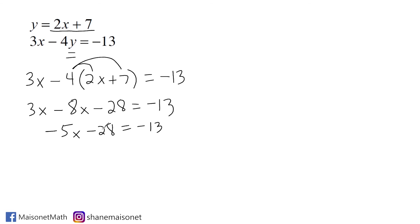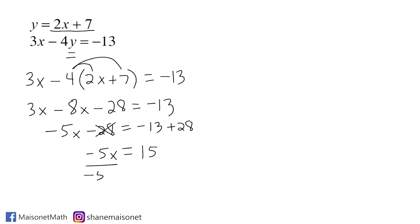Now I take the constant and write its inverse on the other side, which is positive 28. Combining negative 13 and positive 28 gives positive 15, and on the left we still have negative 5x. To remove this coefficient, we divide both sides by negative 5, and x is equal to negative 3.